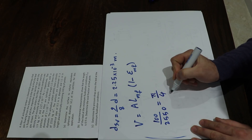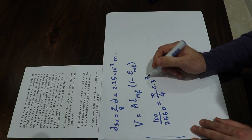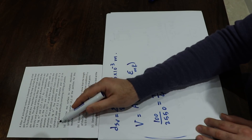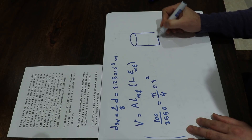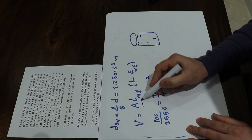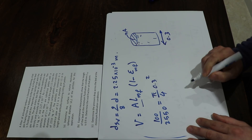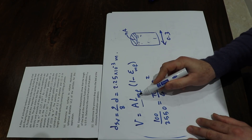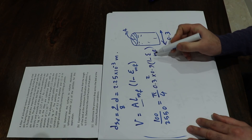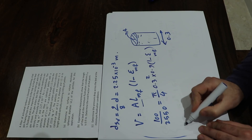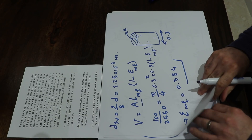The solid volume equals pi over 4 times the pipe diameter squared (0.3 m) times L_MF (0.9 m) times (1 minus epsilon_MF). Note that the diameter used here is the cylindrical pipe diameter of 0.3 m, which gives the cross-sectional area of the container. With one equation and one unknown, solving gives epsilon_MF equal to 0.384.